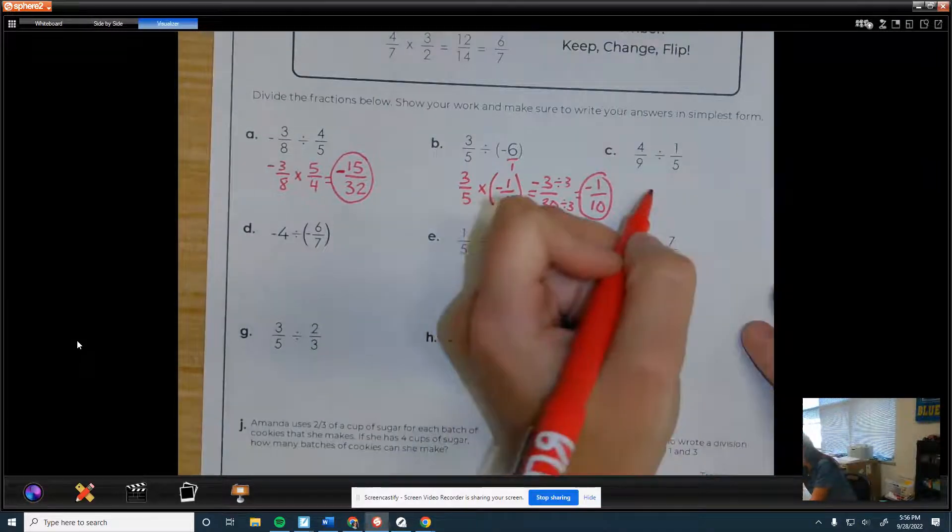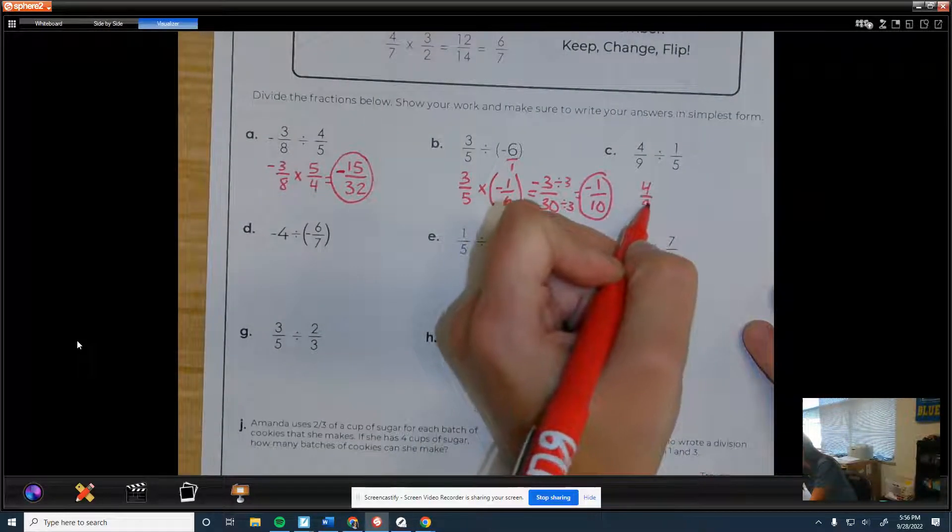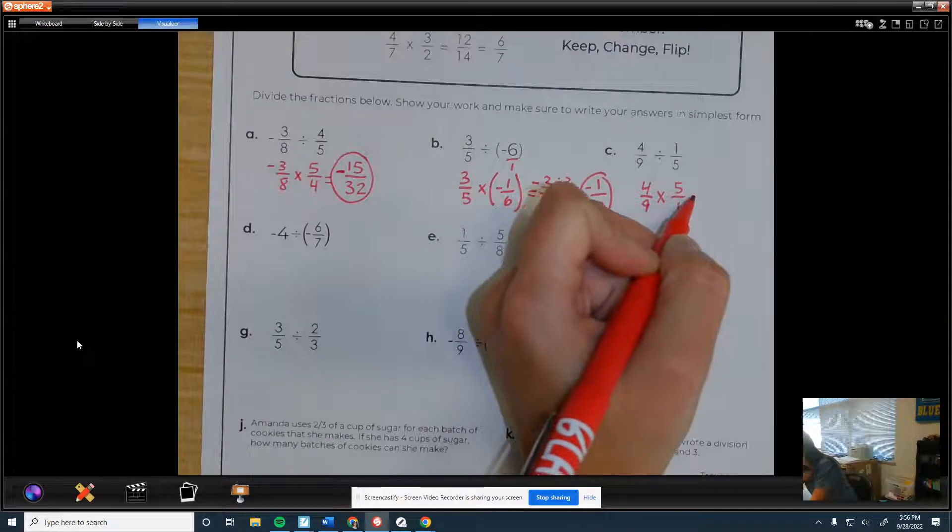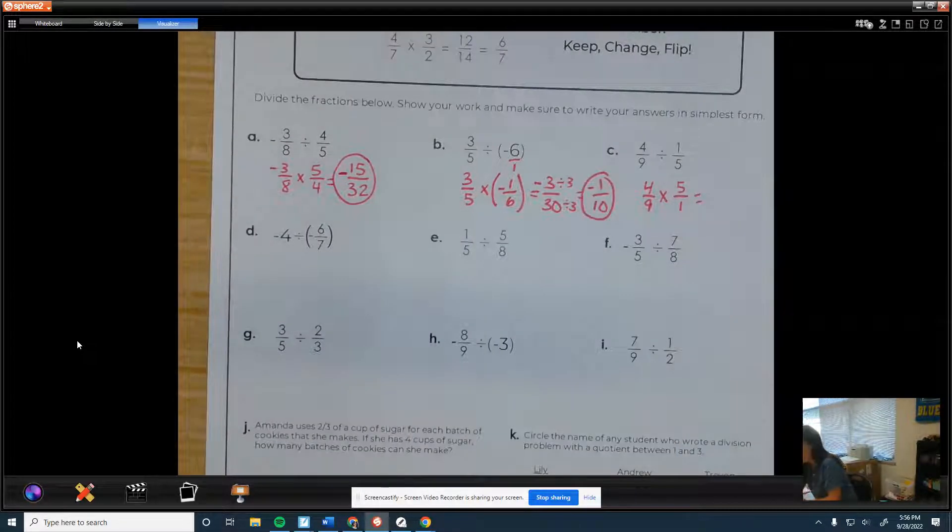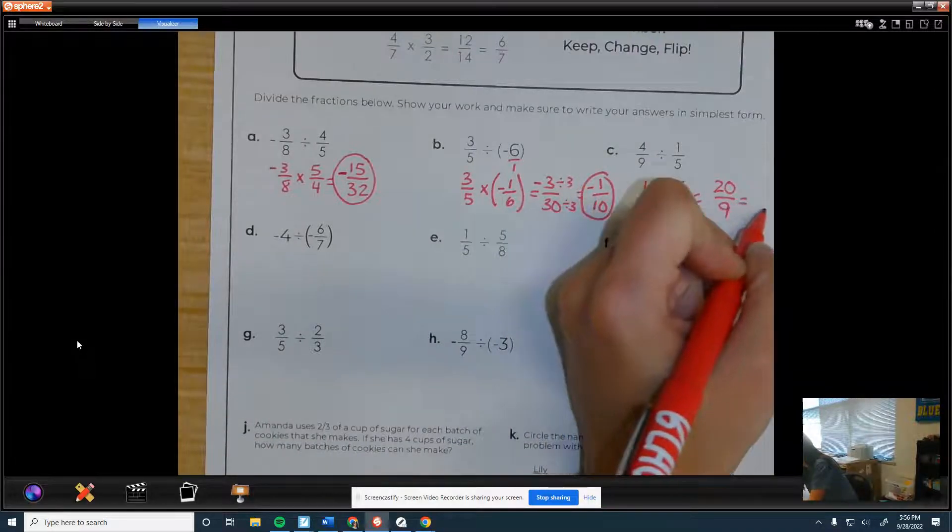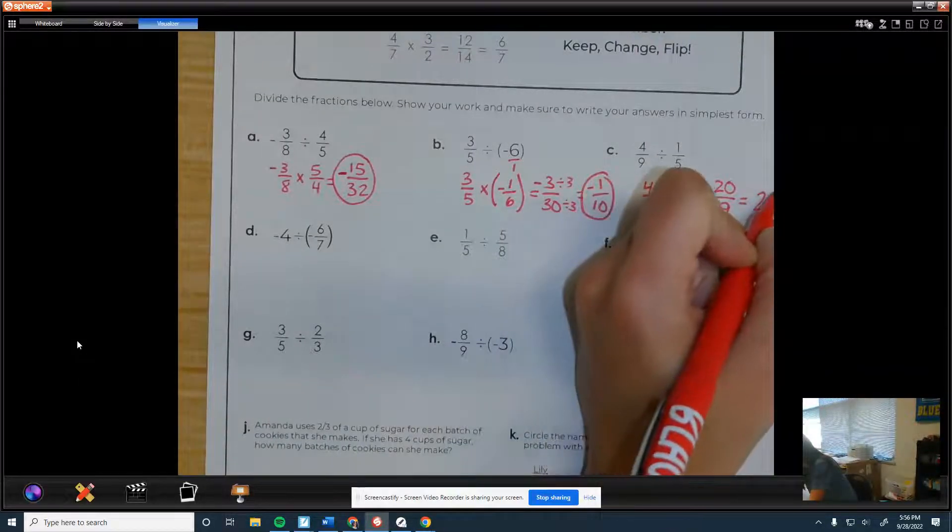Third one. Keep the 4/9. Change the sign to multiply. The reciprocal of 1/5 is 5, or 5 over 1. That would be 20/9, which is 2 and 2/9.